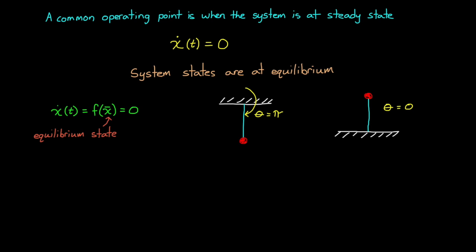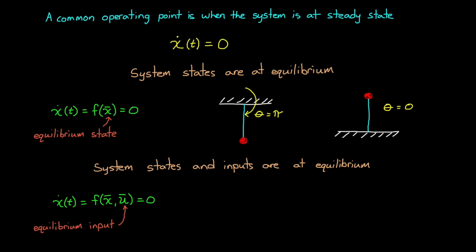But we also have inputs into the system, and the combination of inputs and the system states can also be at an equilibrium. For example, if the input into the pendulum is a torque, then we can find a constant torque that moves the equilibrium point to pi over 4 radians. If we initialize the pendulum in this condition, it would not move since the torque from gravity and the input torque perfectly balance out, and we can linearize around this condition as well.